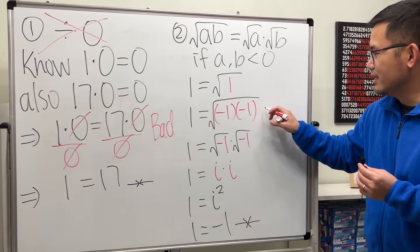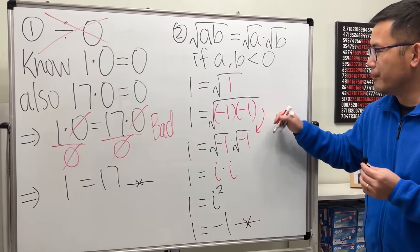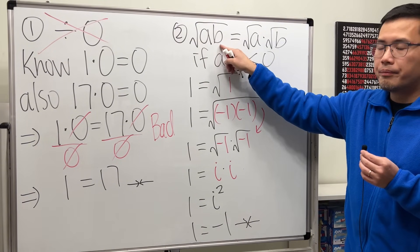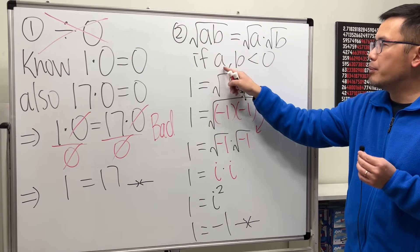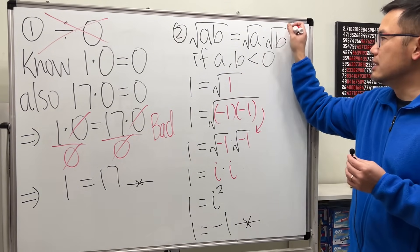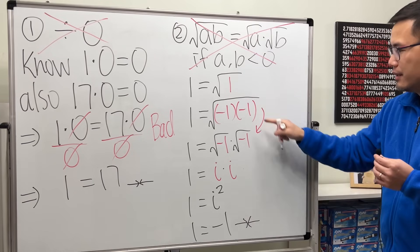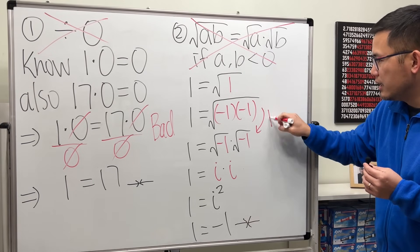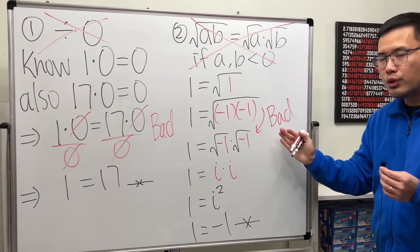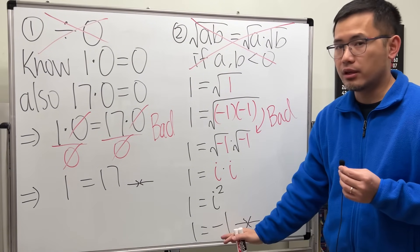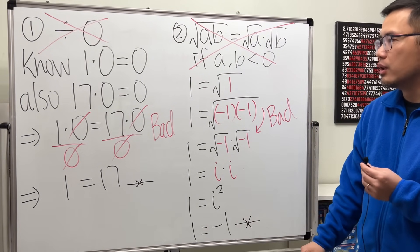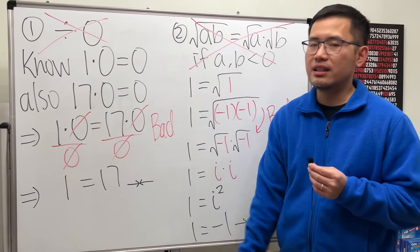Something must be wrong — and it's exactly right here. As you can see, if you have square root of a times b and they are both negative, and if you want to break them apart, this is not okay. From here to here is bad. Don't do it, because otherwise this kind of thing will happen. We just have to avoid doing so, just like with dividing by zero.